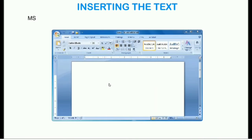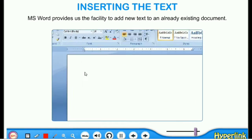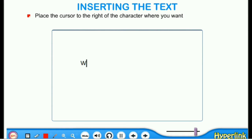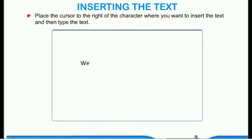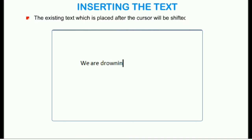How to insert text: MS Word provides us the facility to add new text to an already existing document. Place the cursor to the right of the character where you want to insert, and then type the text. The existing text which is placed after the cursor will be shifted to the right side.